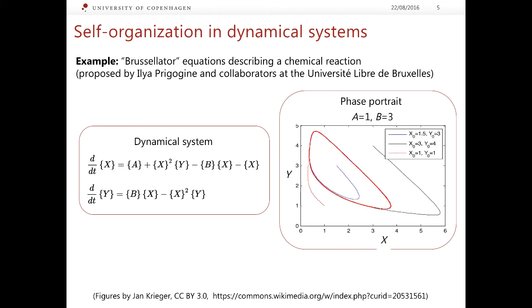Now change parameters, in particular increase B to 3, the situation changes quite dramatically. Instead of the fixed point, we have a more complex object, a closed loop. However, it has the same property. We set initial conditions from three different points and from all of them, the phase trajectory converges to the same closed loop. This closed loop is called a limit cycle, which is another attractor.